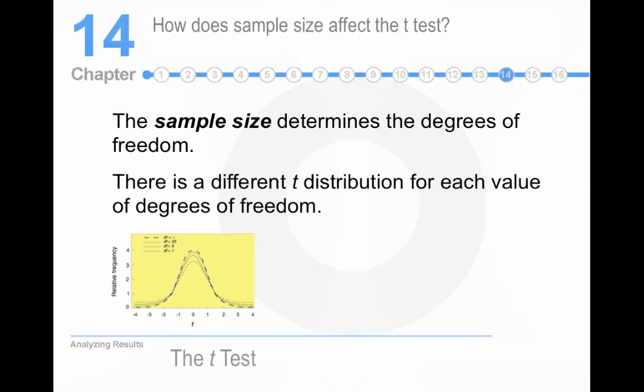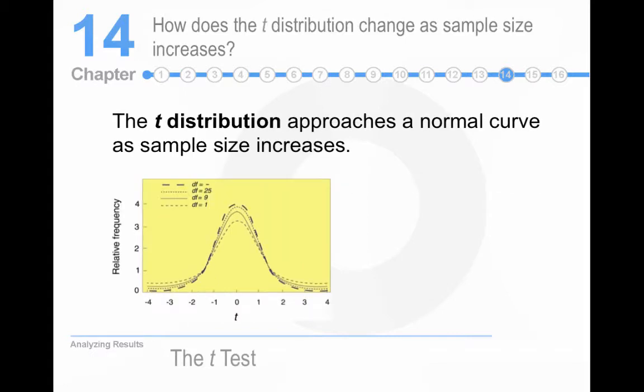Well, let's switch to t-tests then. How does sample size determine the degrees of freedom? Well, t-scores are like z-scores. But z-scores are based on an infinite number of observations and a known population mean and standard deviation. T-distributions begin to approximate z-distributions as you add more degrees of freedom, which this chart kind of shows. So the t-distribution approaches the normal curve as sample size increases.